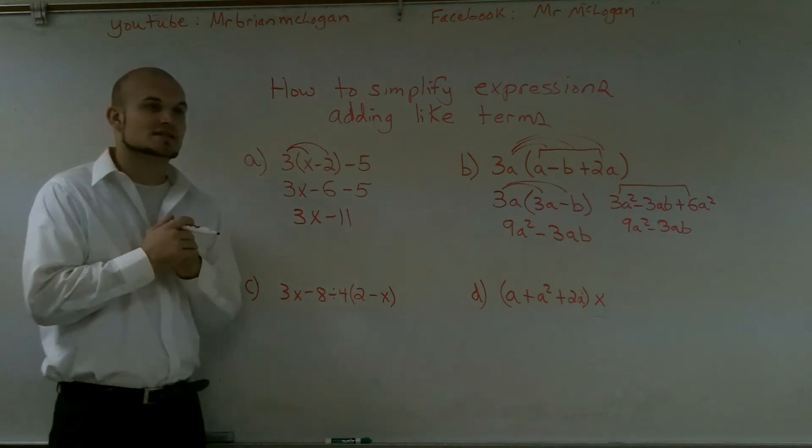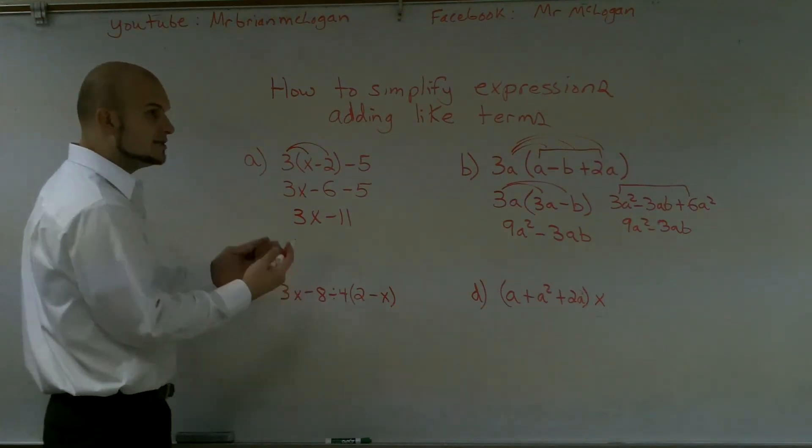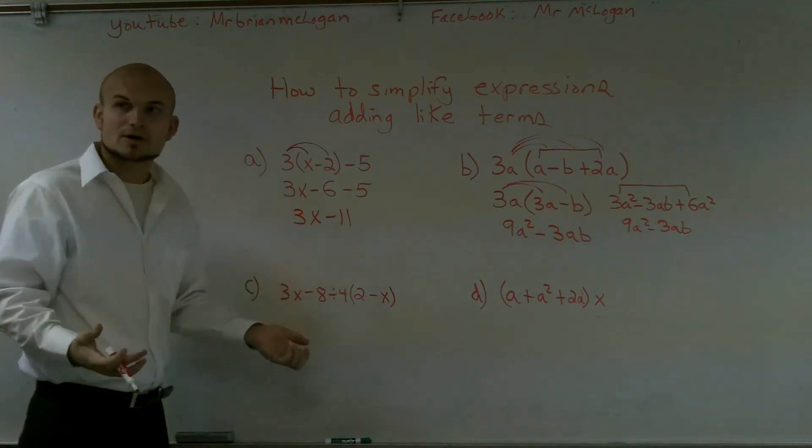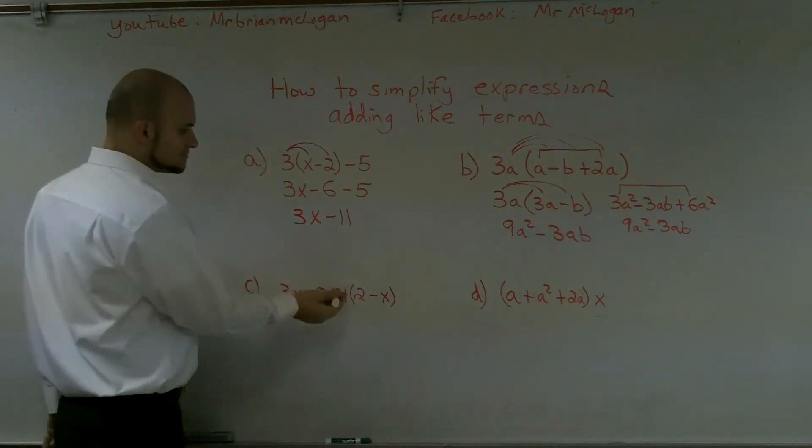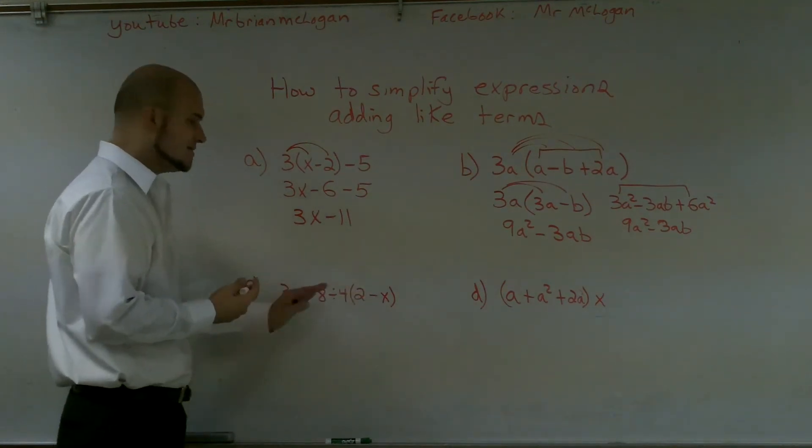Over here, I'm going to have to use again my order of operations before I do anything. I notice here I need to, I look in here and I have a division sign, I have a distributive property. What do I do first? Well, if you guys remember, distributive property is actually multiplication. You're multiplying every term inside of there. However,